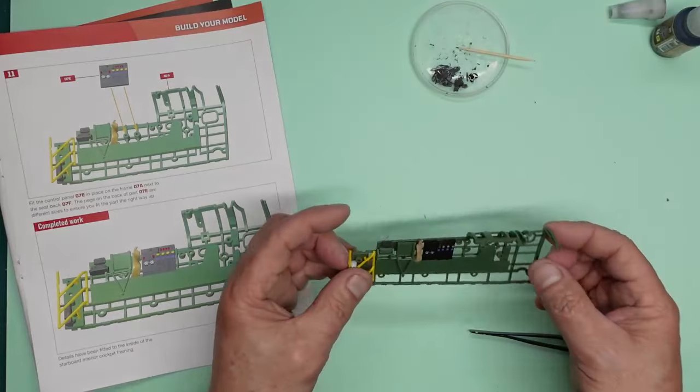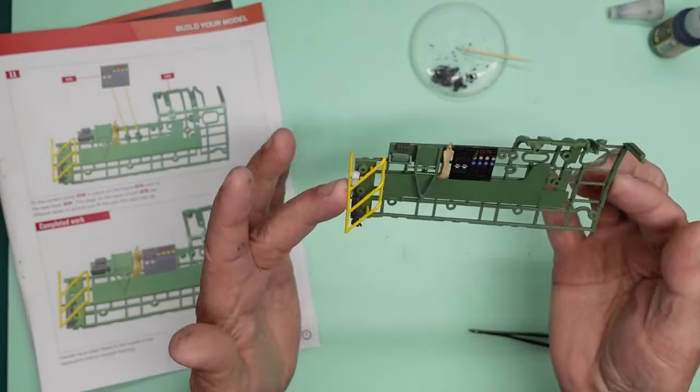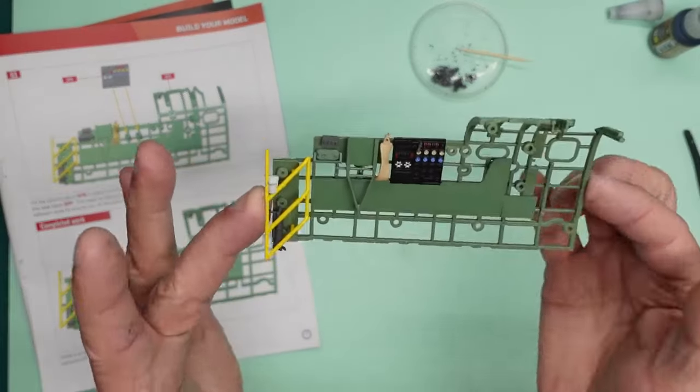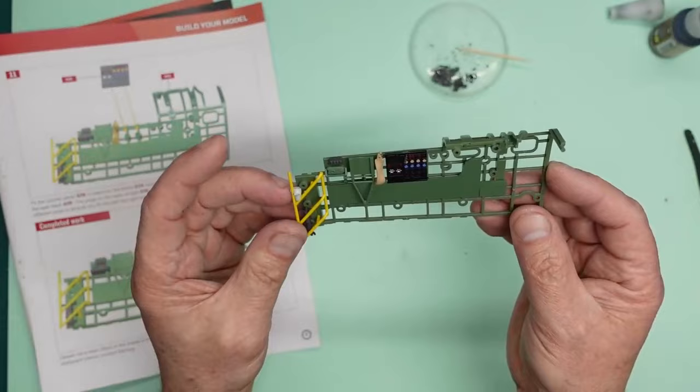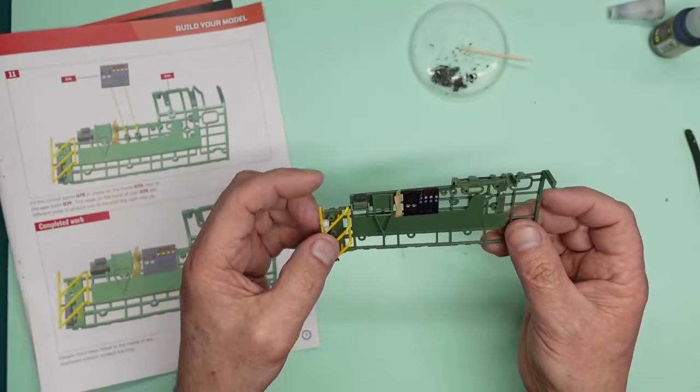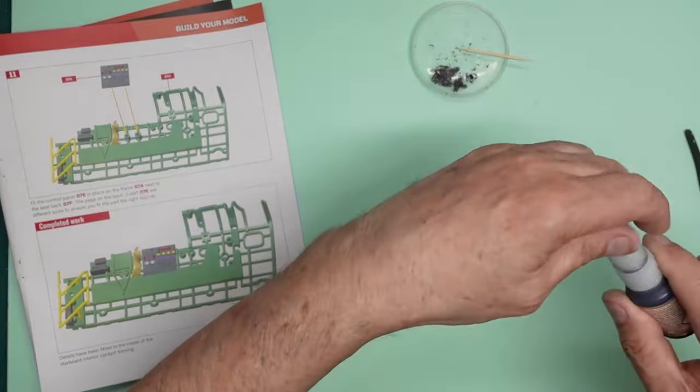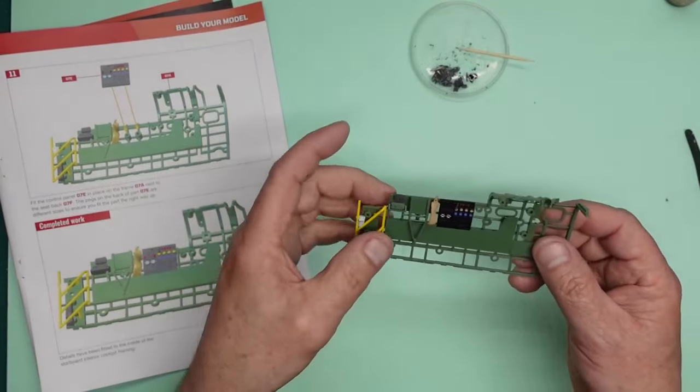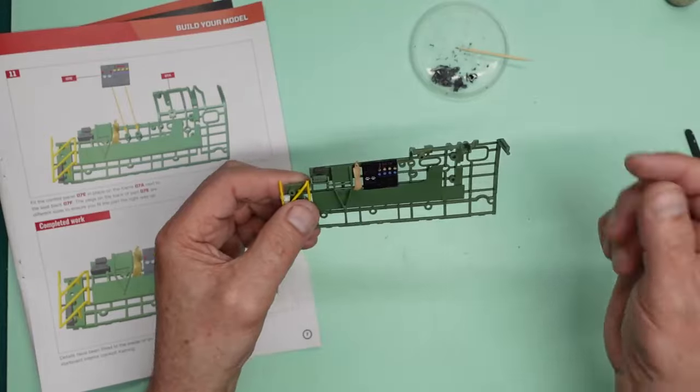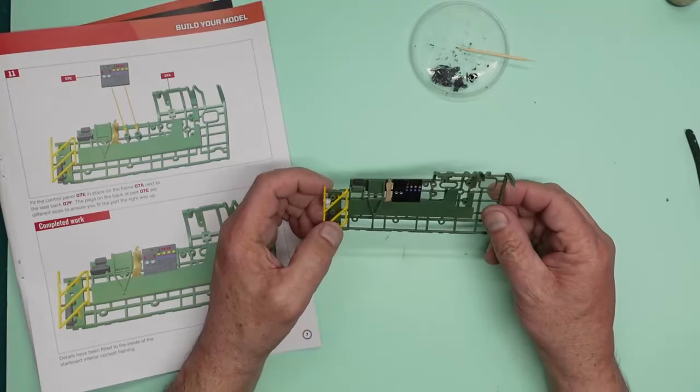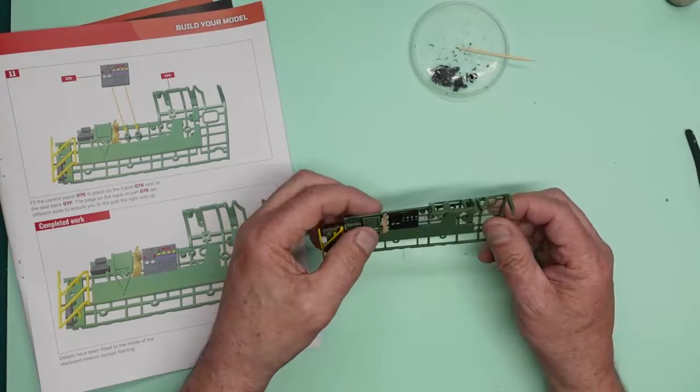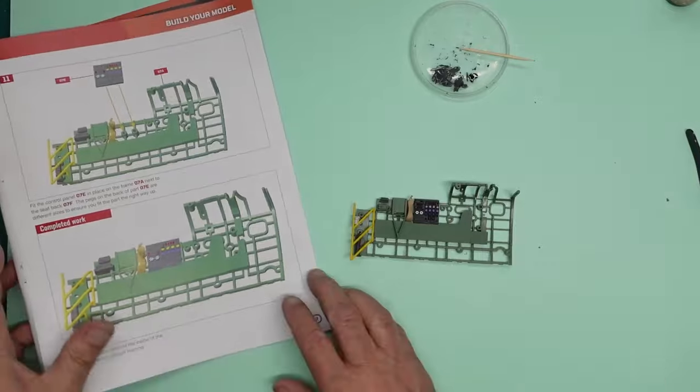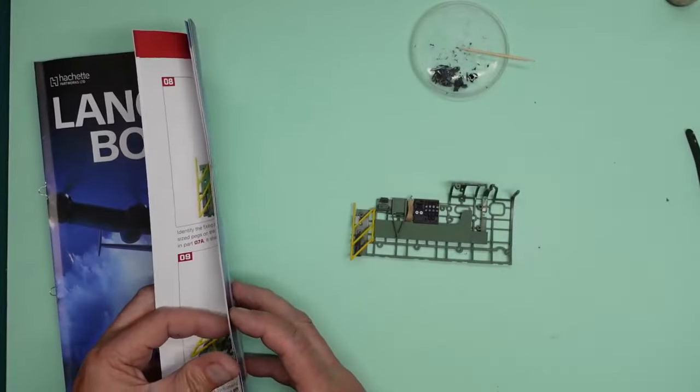So that is that guys. That is our completed step seven. And as you can see, as I've said many times already, this model is turning into a very very nicely detailed model. For a part work, it is very very nice. So don't forget. Hit the like. Hit the subscribe. If you want to get one of these, get on over to Hatchet Part Works with the link I put up at the beginning of the video. And get yourself subscribed. And you can build along with me. All the videos are here. They're all in the playlist. You'll be able to watch them all. I think this model is built over about 130 parts. So we're looking at two years.